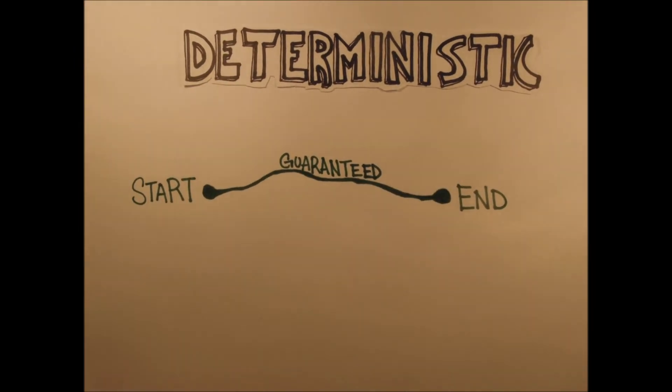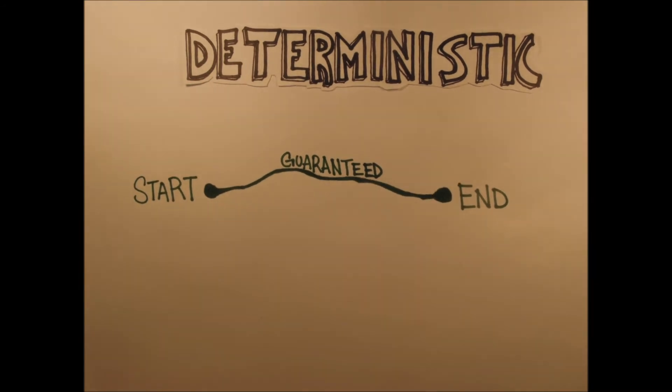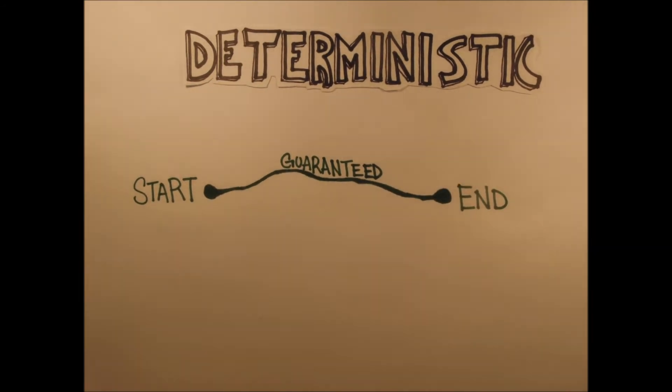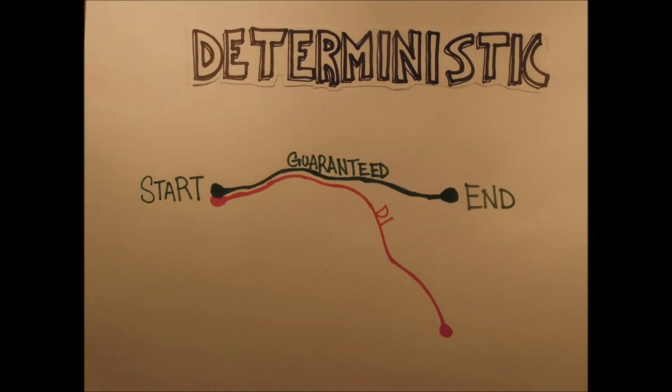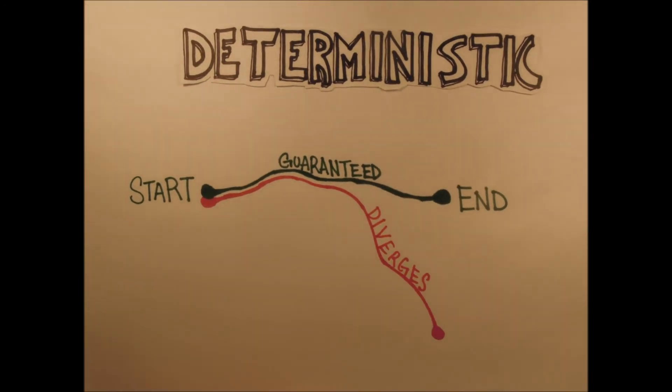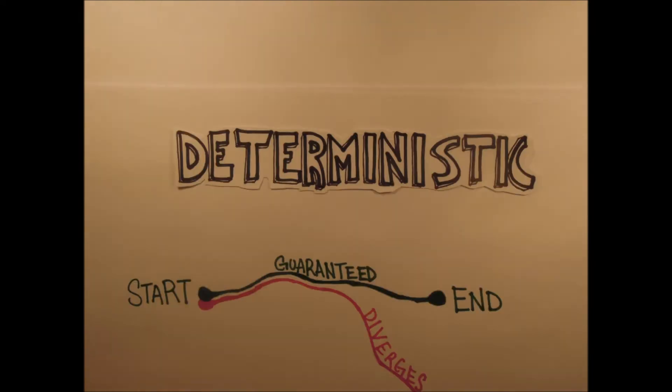What chaos theory does say however, is that if you start anywhere but A, even if you're really close to A, you could end up a long long way from your original ending point. And the only way to know where you end up is by knowing where you start exactly.